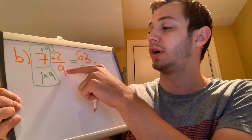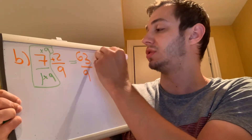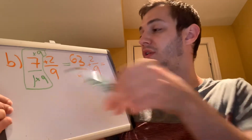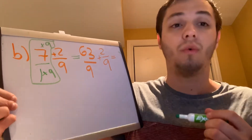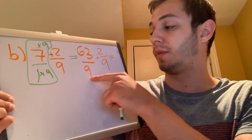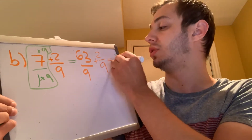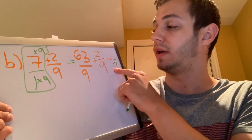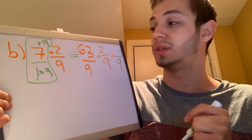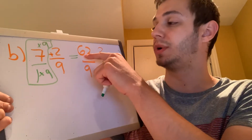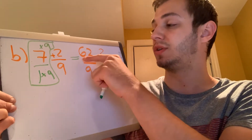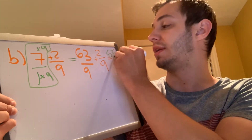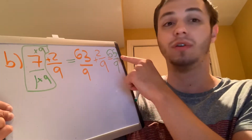Plus our original fraction that we were adding it to, which is 2 over 9. Our bottom number will not change, so our bottom number will stay as 9. The only thing that will change is our top number. We're going to add 63 plus 2 which gives us 65. So our answer will be 65 over 9.